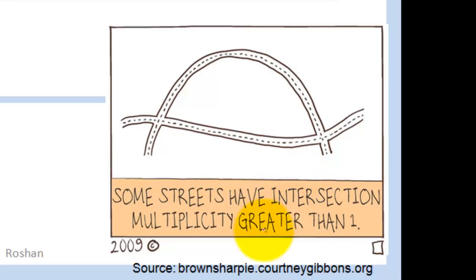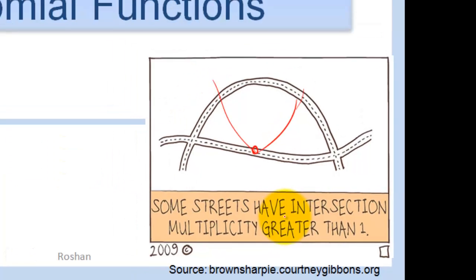But if it had multiplicity, like we saw yesterday, of 2, then it just hit the axis. It just touched. Remember, every time it has even multiplicity, it touches. If it has odd multiplicity, it crosses. So that's the point of that comic.